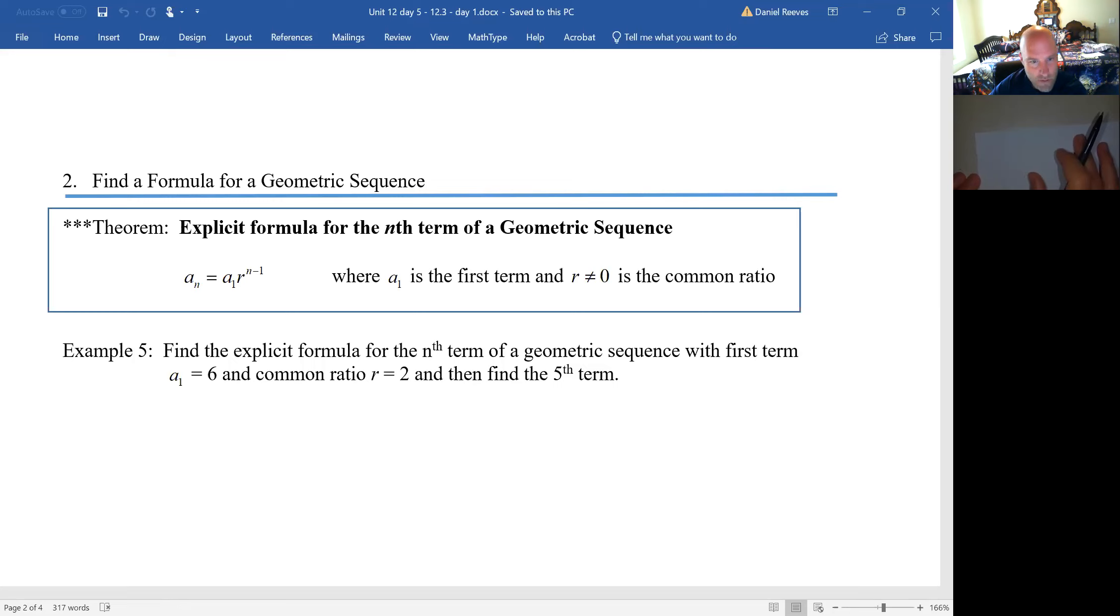Find the explicit formula for the nth term of the geometric sequence for the first term, a sub one equals six, and a common ratio of two. Okay. r equals two. So that should be easy. Just following that formula, a sub n equals six times two to the n minus one. So specifically, they wanted to find a sub five. That is six times two to the five minus one. That is six times two to the fourth. That is six times 16. And that should just be 96, I believe. Let's, you know, pause the video while I set it up. Let's see this in action on a spreadsheet. One sec.